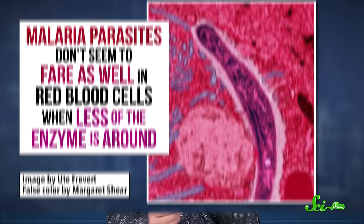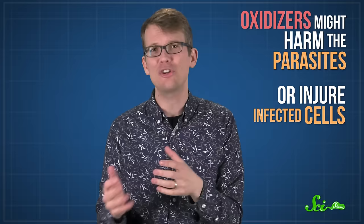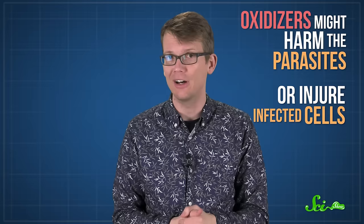That's probably because, where there's less of the enzyme, there are more of those oxidizing molecules. And all those oxidizers might harm the parasites, or injure infected cells just enough that they're gobbled up by the immune system before the most dangerous forms of the parasite develop.